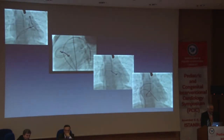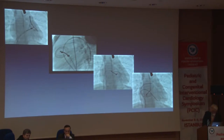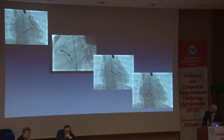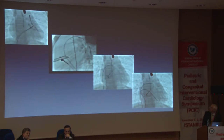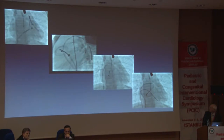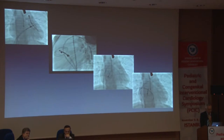What I prefer is to pull the sheath back. If you can't get the device within the sheath, pull the sheath back. You can then create a loop to try and get it to go on its own through the tricuspid valve. Once it's in the right atrium, then you can actually do whatever you need to do to pull it out.